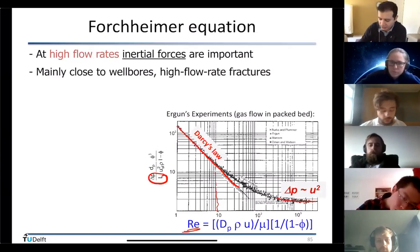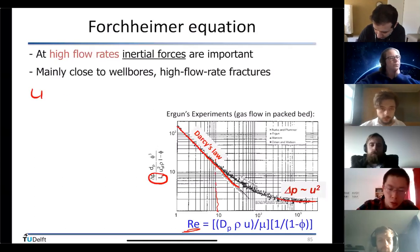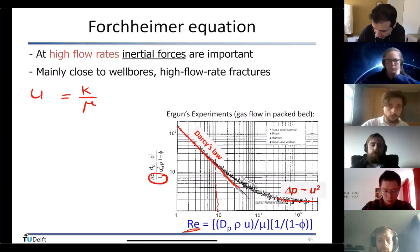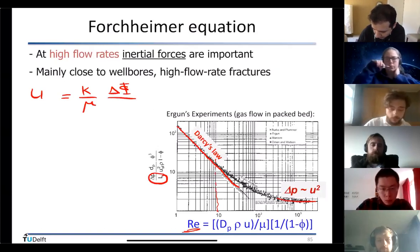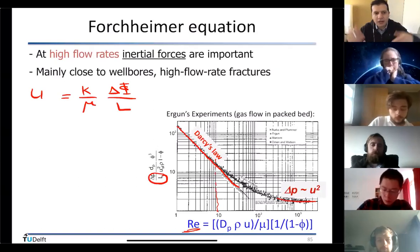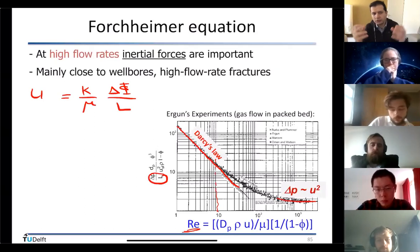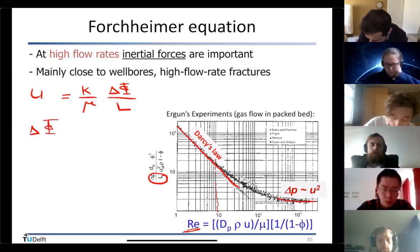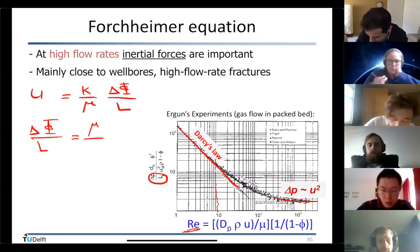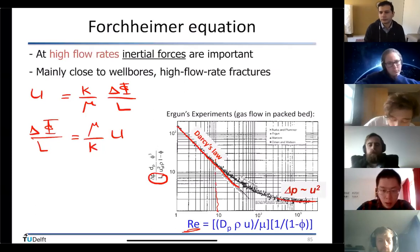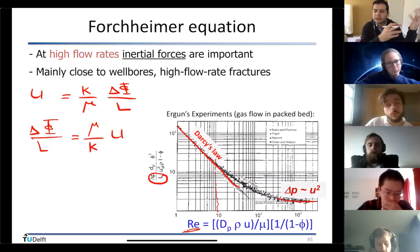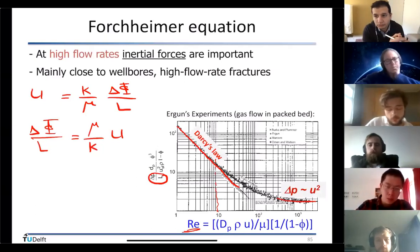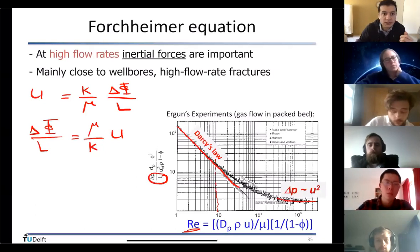In porous media, when you plot scaled pressure drop Δp/L against Reynolds number, Darcy's law is valid up to about Reynolds = 10. After 10, you enter a transition mode and eventually reach fully inertially driven flow. Inertial forces become relevant close to wells or fractures. From Darcy's law: u = k/μ · (Δφ/L), so Δφ/L = (μ/k) · u.